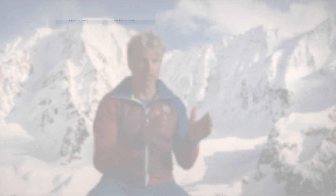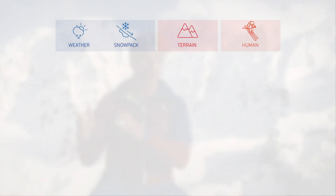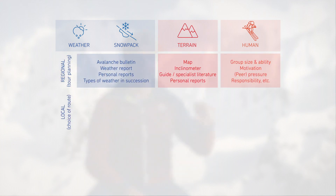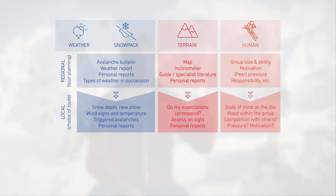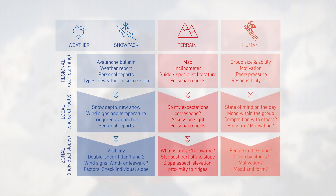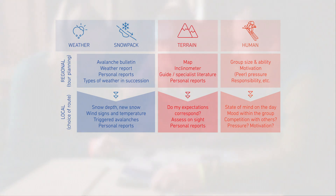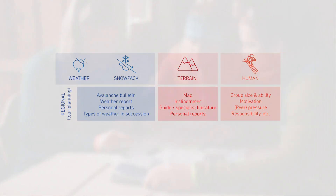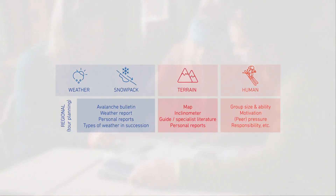When planning a tour, I try to amass all of the information possible and structure it in a 3x3 grid: conditions, terrain, people. This method has three phases — tour planning, then in the mountains where I include my observations to make things more precise, all the way to the individual slope. It is important that you study all three factors intensively during the tour planning stage.